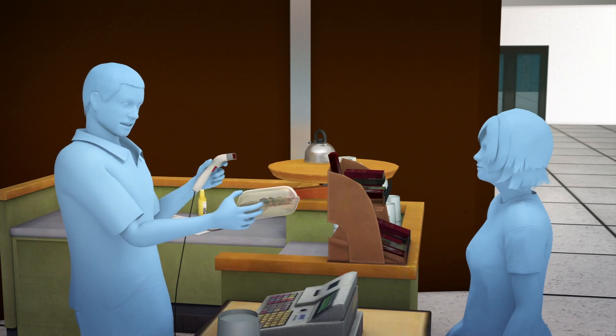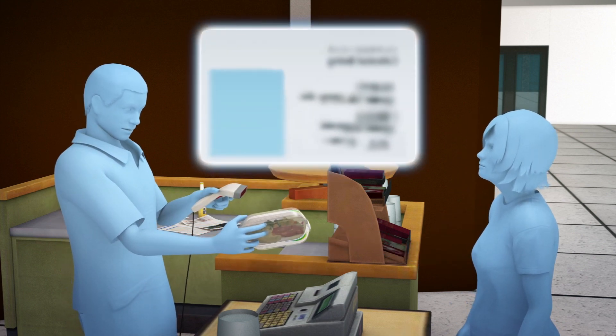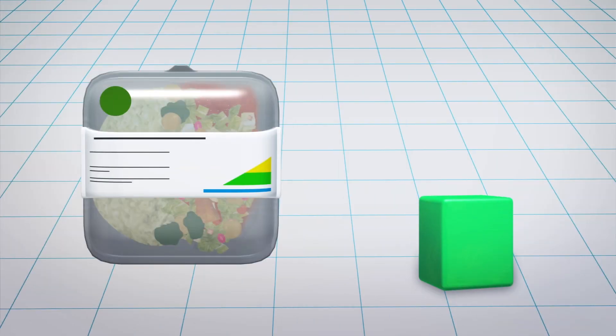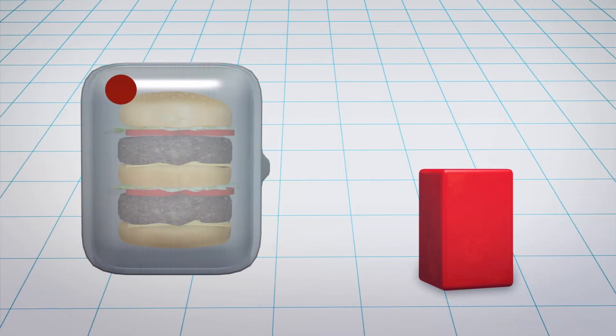Researchers tracked participants' purchases before and after the labels were added via their employee ID numbers. They found that purchases of green-labeled food increased while those for red-labeled food products decreased.